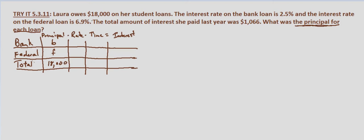The rate for her bank loan is 2.5%, which is 0.025. On the federal loan it's 6.9%, or 0.069. We're told the interest she paid for a year, so our time is one year, and the total amount of interest she paid last year was $1,066. Using the formula interest equals principal times rate times time, the interest on the bank loan is 0.025B, and similarly for the federal loan it's 0.069F.